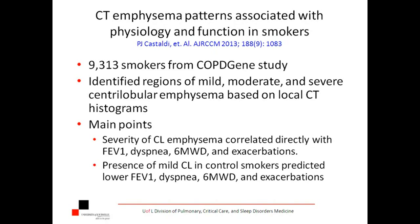When they had the 250 training sets, they put the data into the computer and looked at all 9,313 smokers, correlating findings with lung function studies, quality of life measures, et cetera. What they found is that the severity of centrilobular emphysema correlated directly with FEV1, dyspnea, six-minute walk distance, and exacerbation frequency. So higher grade centrilobular emphysema correlated with important parameters we use to assess severity in COPD. You probably won't see anything on the tests about this yet.